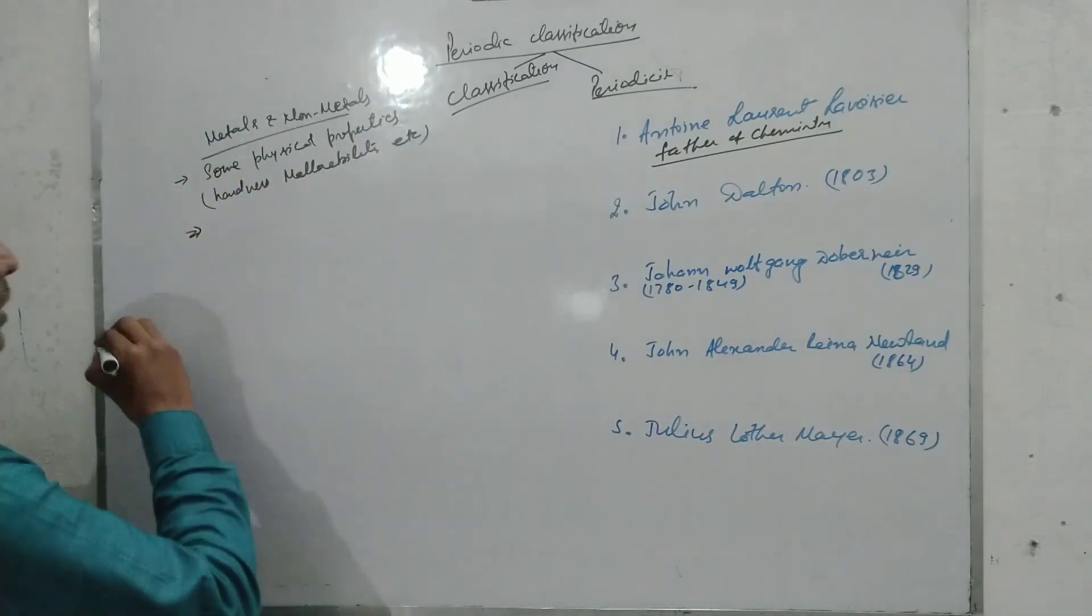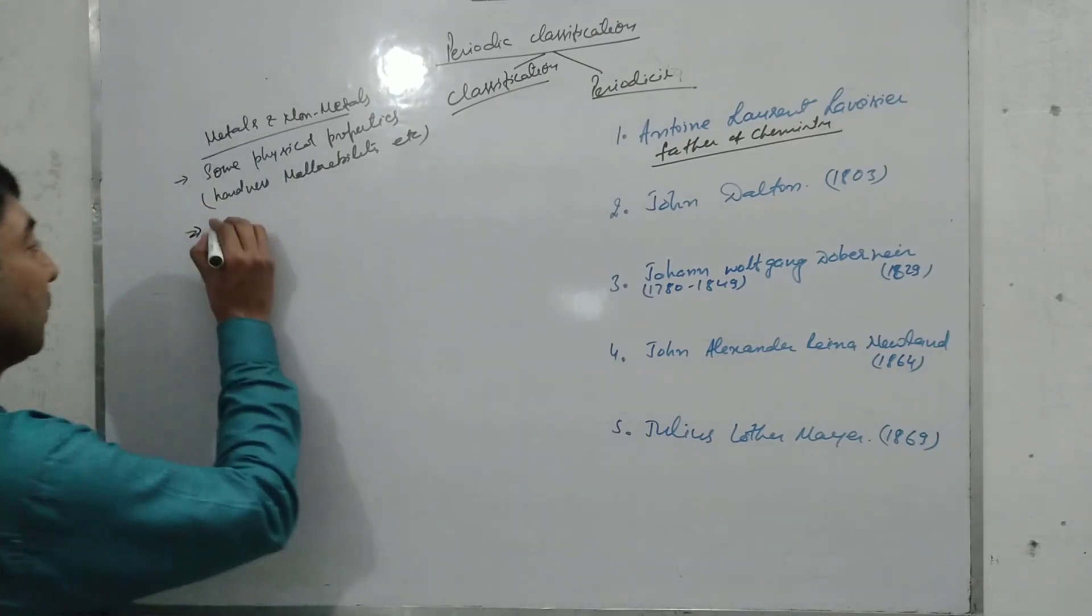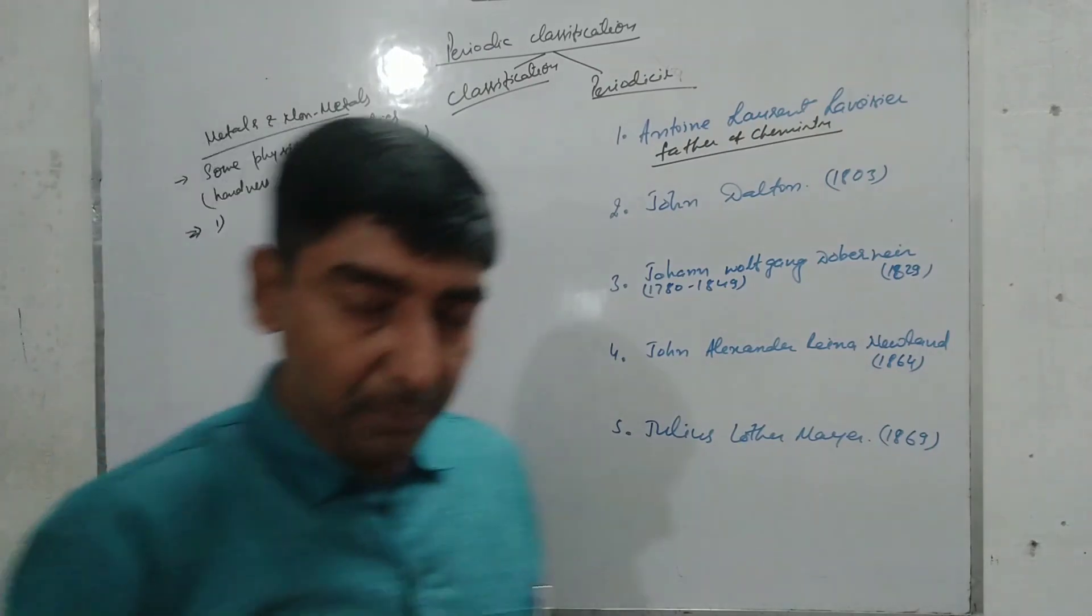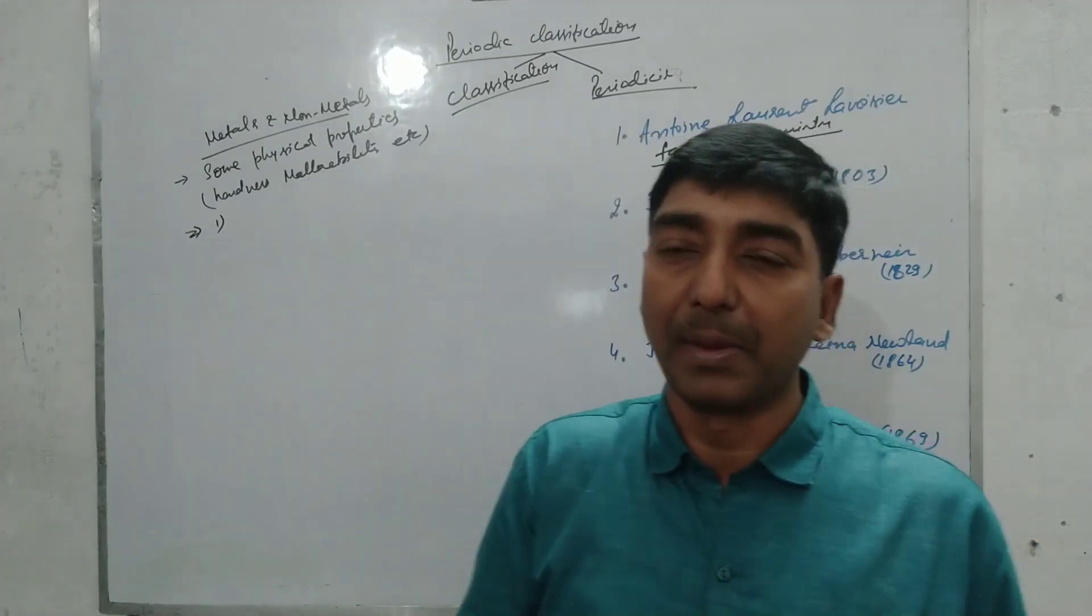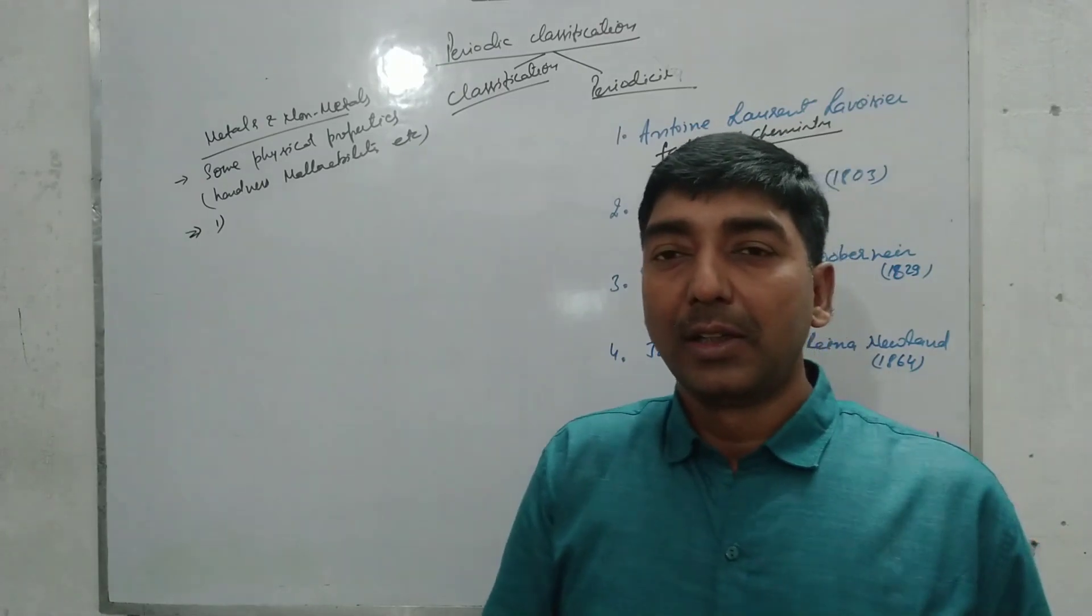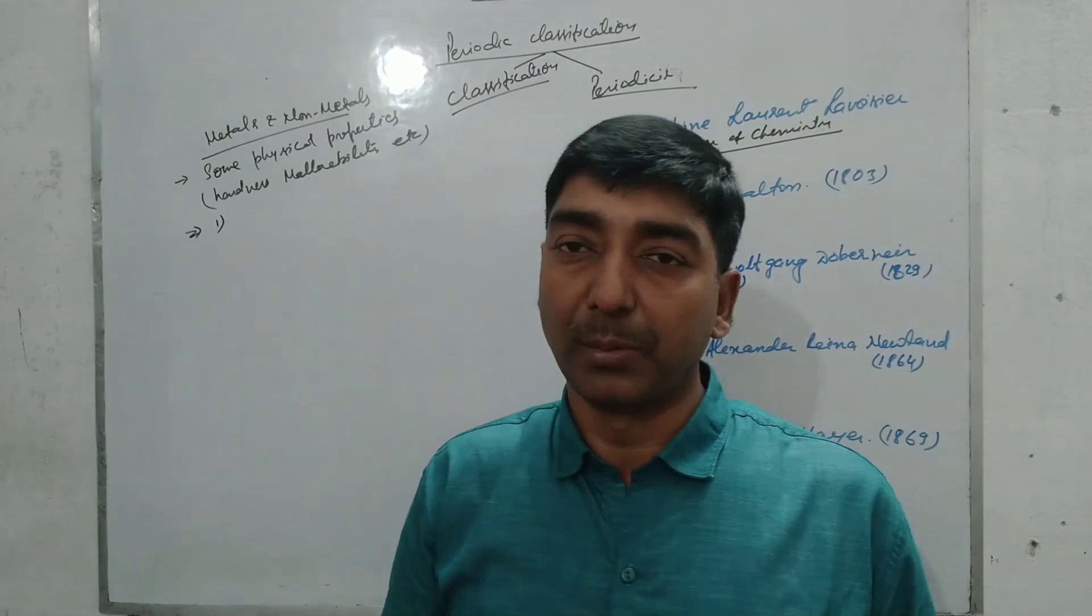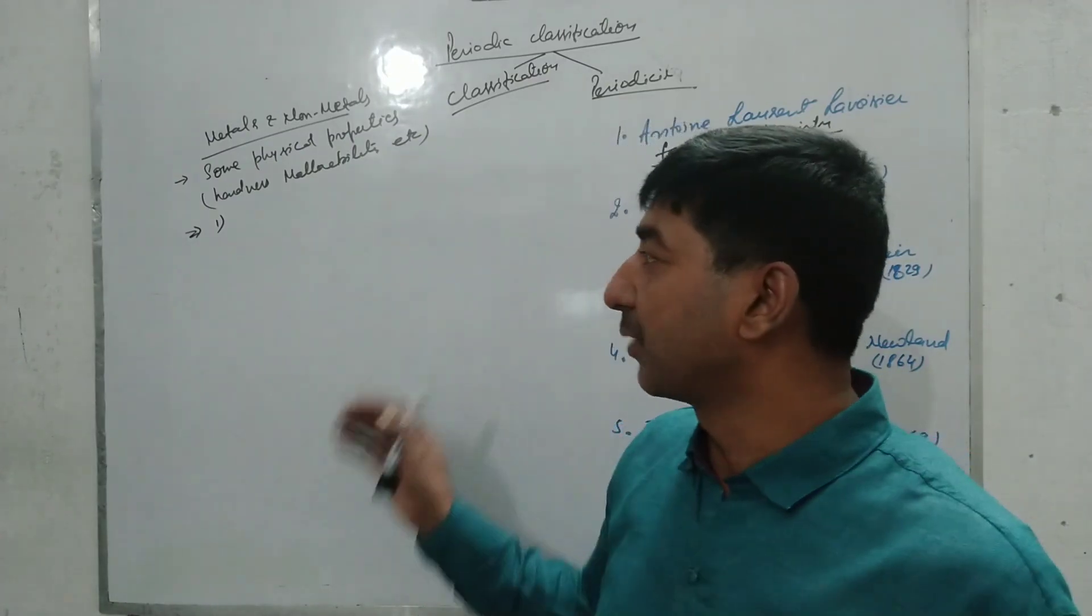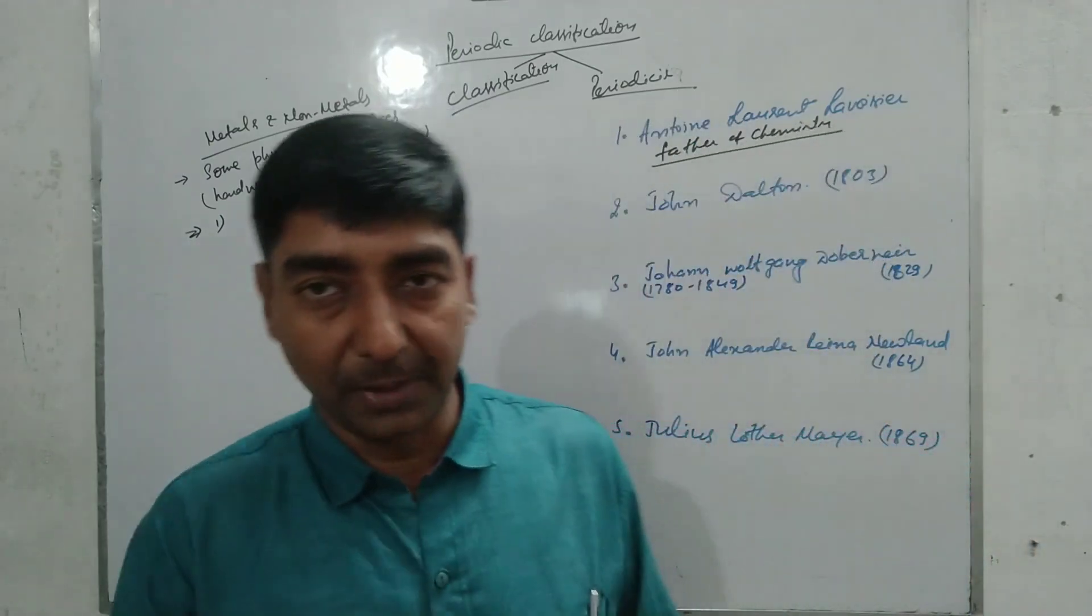Demerits: What are the demerits of this Lavoisier's classification? The first one is he selected only a few physical properties through which the elements were classified into metal and non-metals. That was not sufficient. The second one is there was no place for metalloids, the elements with both characteristics.